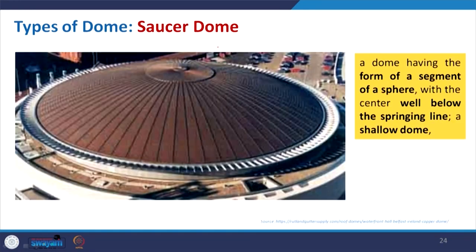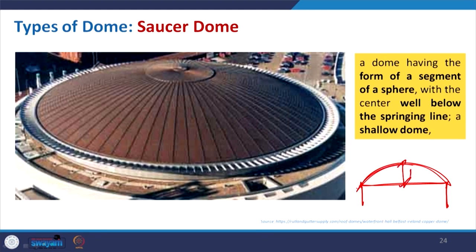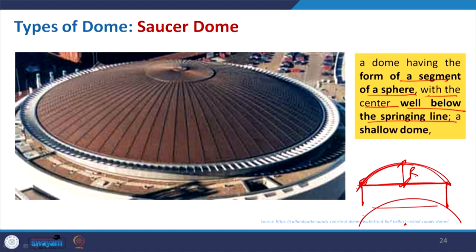The Saucer dome is also referred to as a segmental dome. We talked about the rise — this is your support and whatever height you get is the rise. For the saucer dome it is segmental, so the rise comes from below the support line and the center of the arch is well below the springing line. A dome having the form of a segment of a sphere with the center well below the springing line — here you can see how flat it almost is.